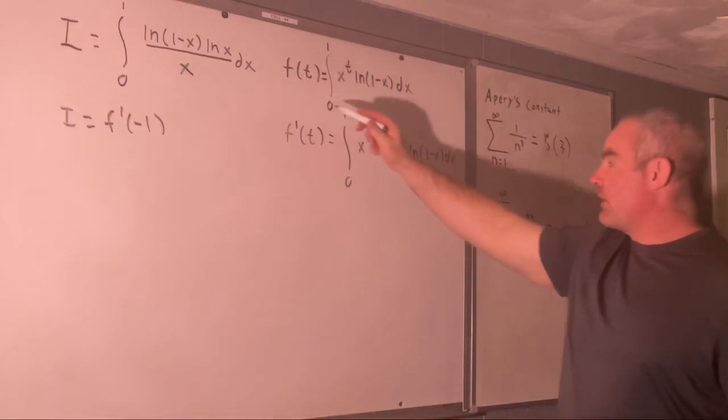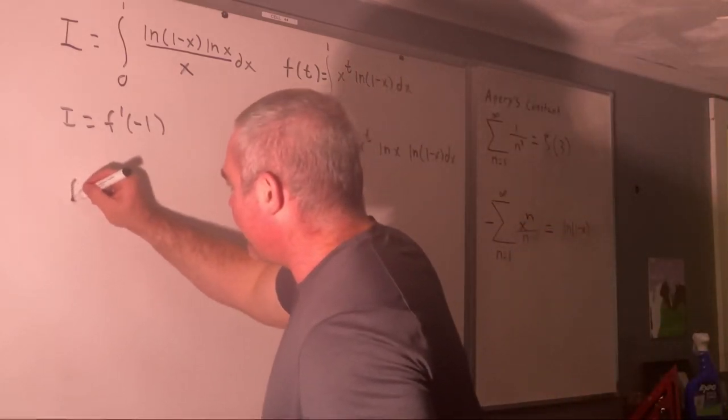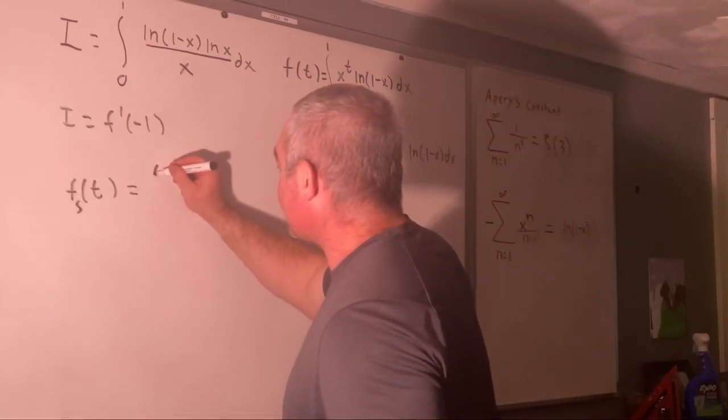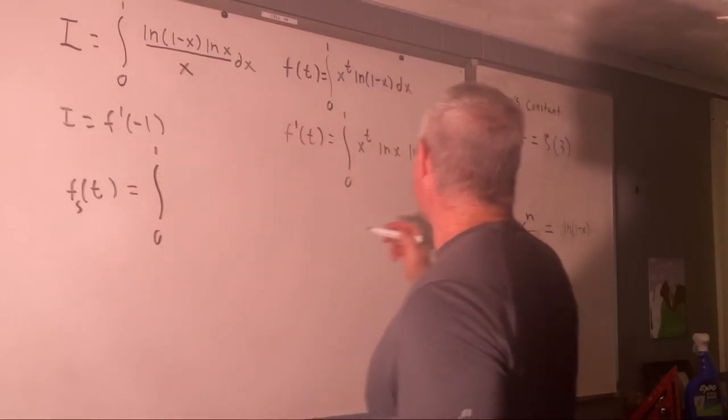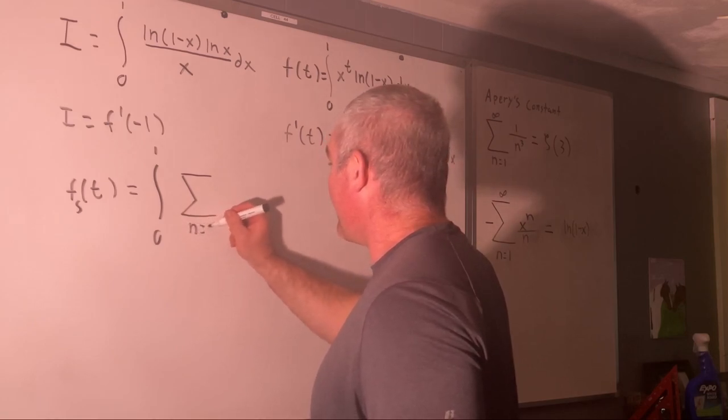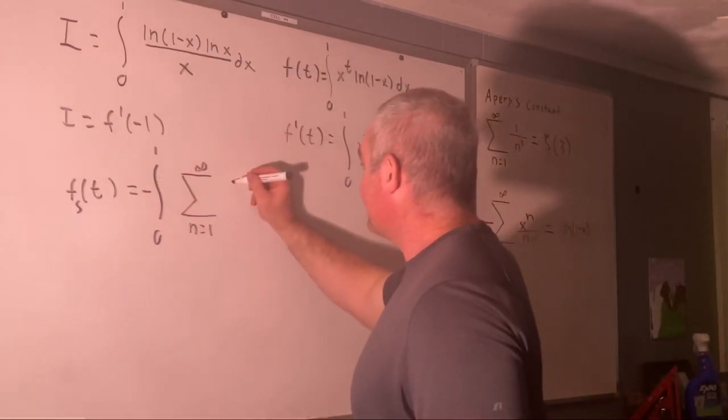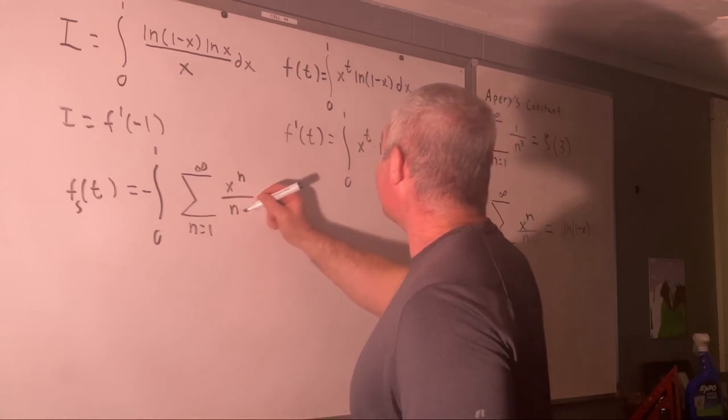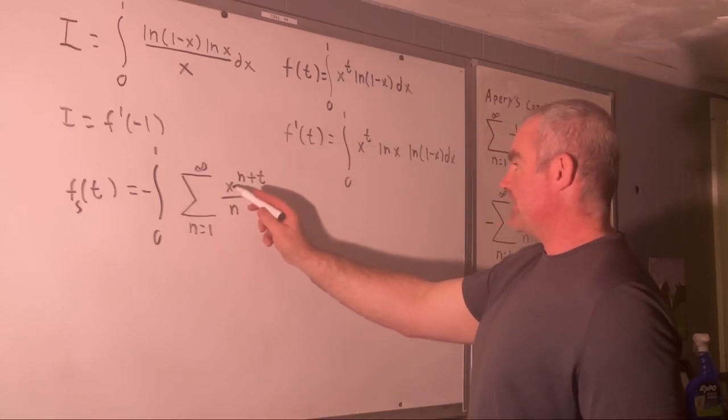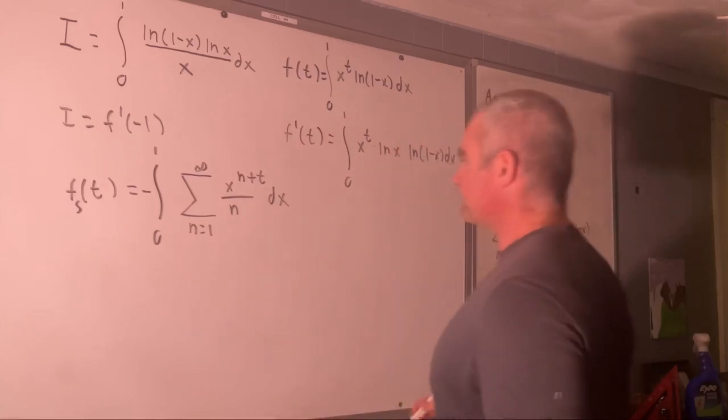So, let's say I is equal to F prime at negative one. Now, let's rewrite our F of T using this sum. So, our F of T, I'll call it F sub S of T, that's equal to the integral from zero to one of the sum going from one to infinity of X to the N over N, well, actually, negative X to the N over N times X to the T, which we will express as an addition to our exponent on X inside the sum and then DX.